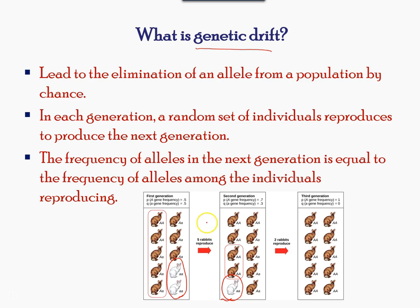As you can see from the population of rabbits shown in the first generation, only five rabbits reproduced. Hence, the second generation had fewer white rabbits. If only two rabbits reproduced, the chance of offspring having the white rabbit trait is even further reduced. The frequency of offspring corresponds to the frequency of alleles in the population.